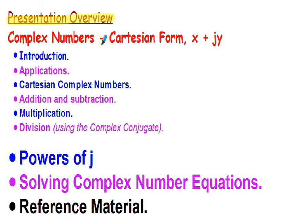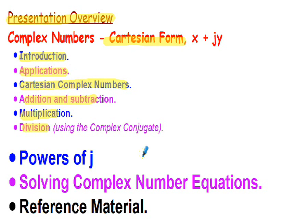This presentation assumes you've seen the previous presentation on complex numbers in Cartesian form, where we introduced complex numbers and their applications. We reviewed the Cartesian form and how to add, subtract, multiply, and divide. In this presentation, we'll look at higher powers of j — j to the 3, j to the 4, et cetera — and how to solve complex number equations. Reference materials are included at the end, and I strongly encourage you to refer to these for a more complete understanding.